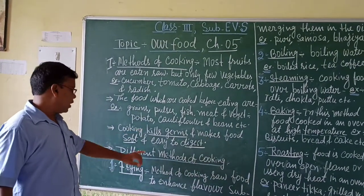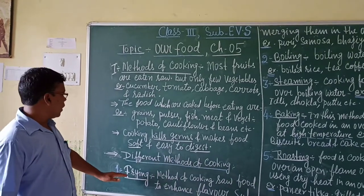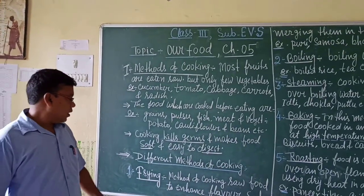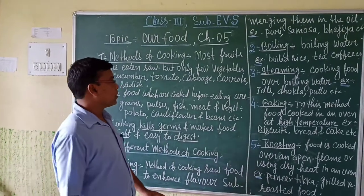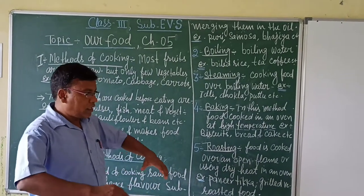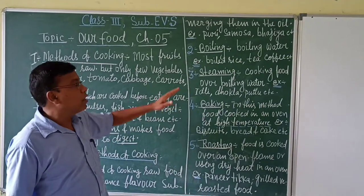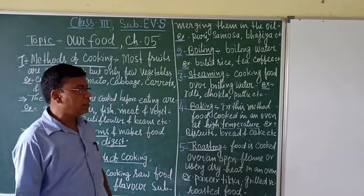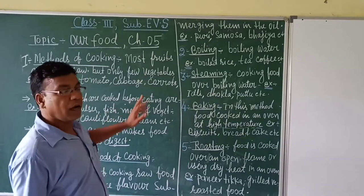Now let us come to the different methods of cooking. The first method is frying. The frying method is cooking raw food to enhance flavor by submerging it in oil. This method needs more oil to fry the food materials. Some examples are samosa and bhaji. These are fried in oil. This is the first method.